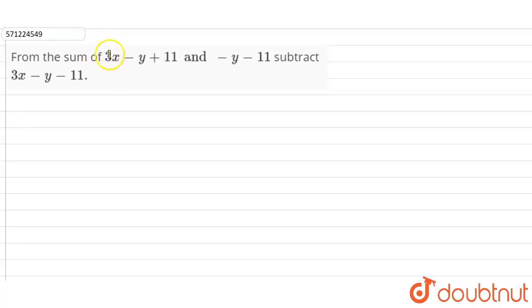Hi students, in this question we have to find the sum of 3x minus y plus 11 and minus y minus 11, and from the sum of this we have to subtract 3x minus y minus 11.